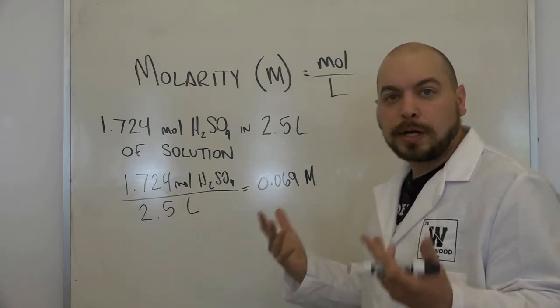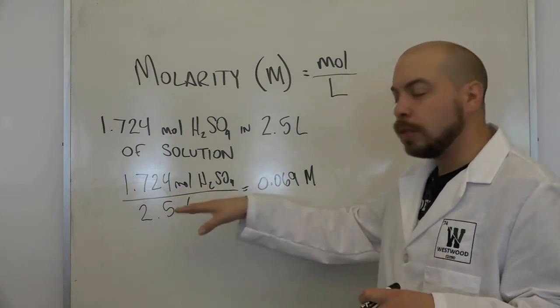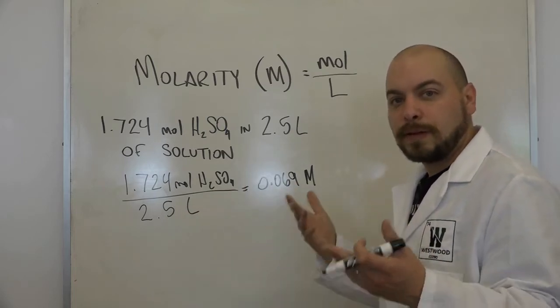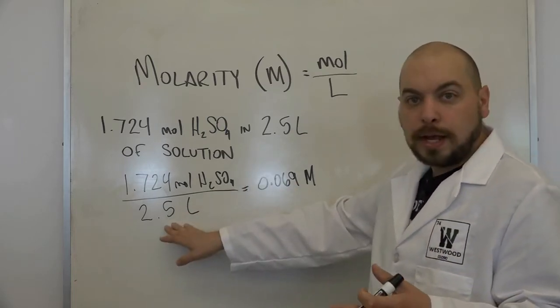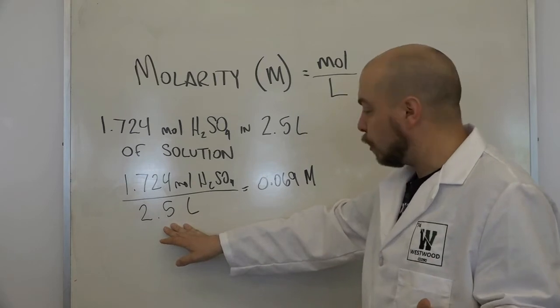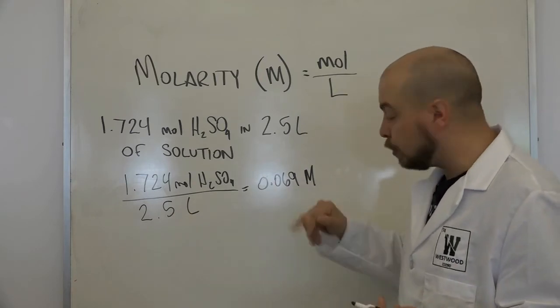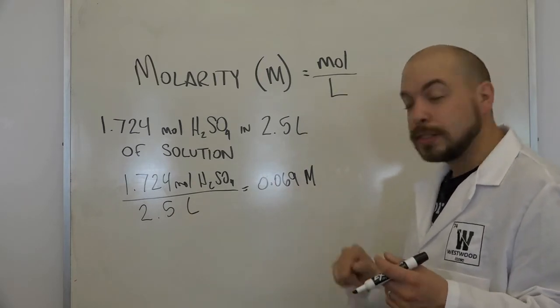So remember when we're talking sig figs, we take our least number of significant figures in a used value in a calculation, get our final. So two sig figs are our final answer. So this is our final answer.